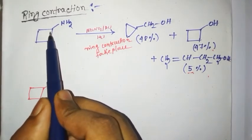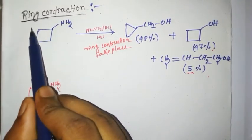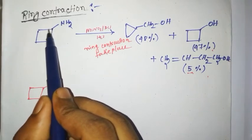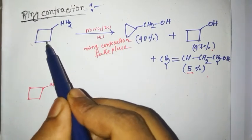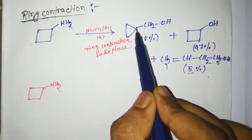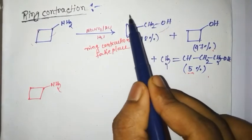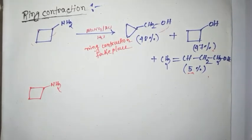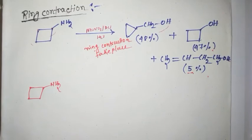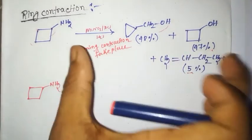If we see this cyclic primary amine, this is a 4-member ring and this is converted to 3-member ring. So here, ring contraction takes place. Now we discuss this mechanism.